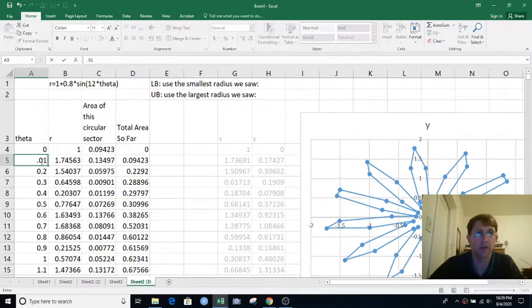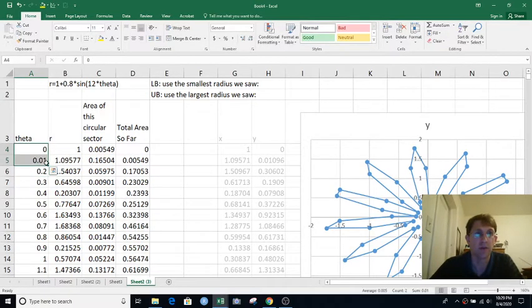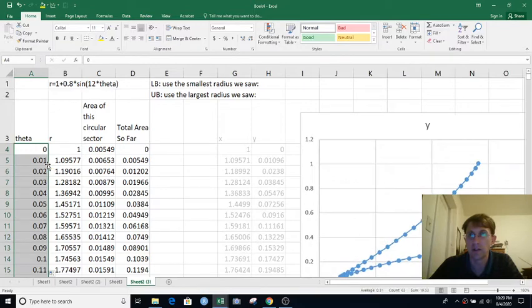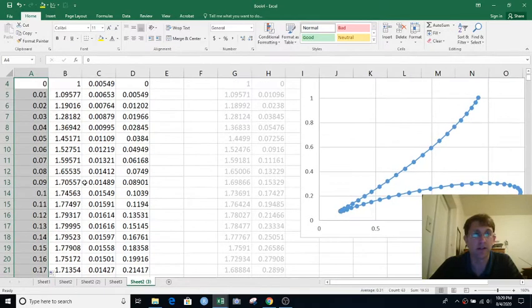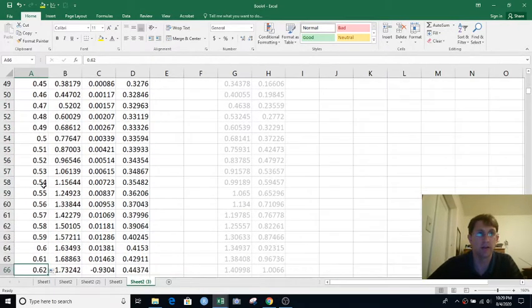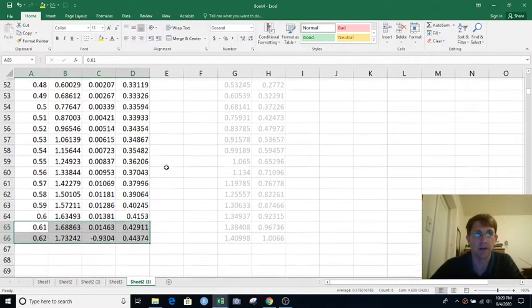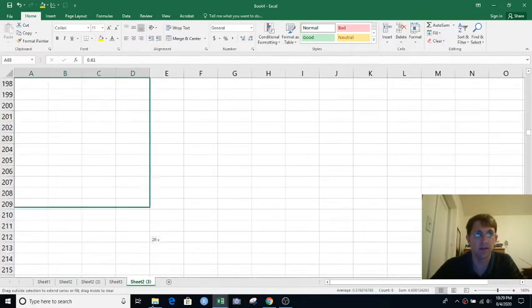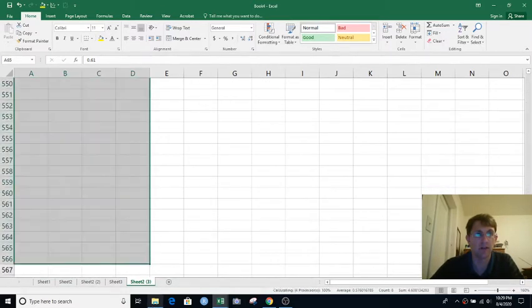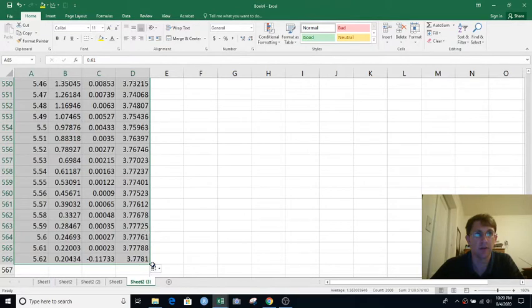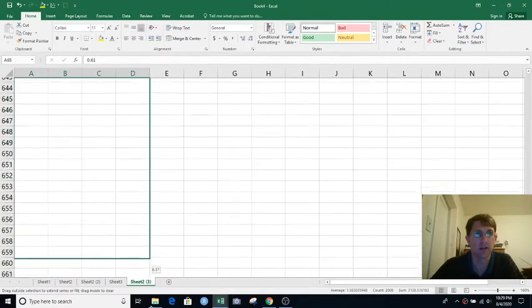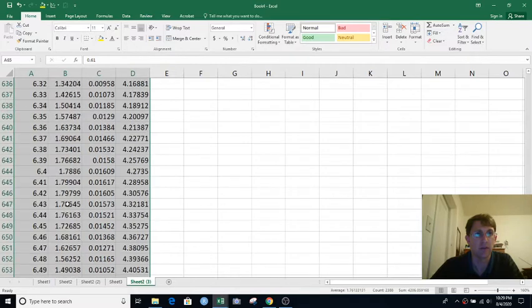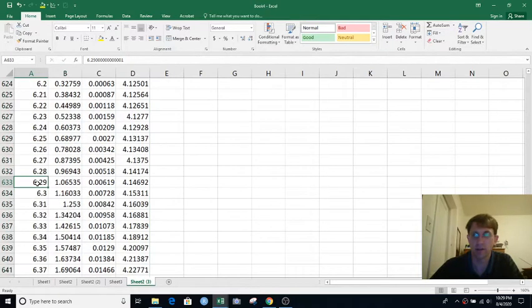So instead of going by steps of 0.1, let's go by steps of 0.01. Oh, that does look a lot nicer, but now we need to go farther out into theta territory. So let's see where we are. We're almost at 2 pi. Oh, a little past 2 pi. That's close enough.